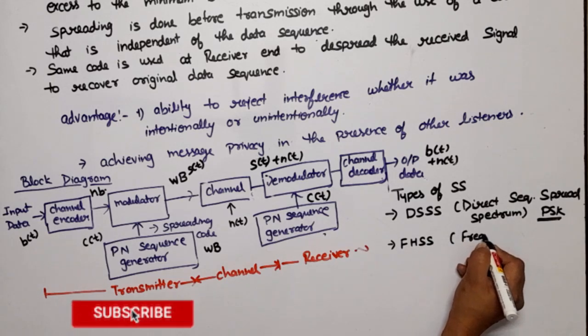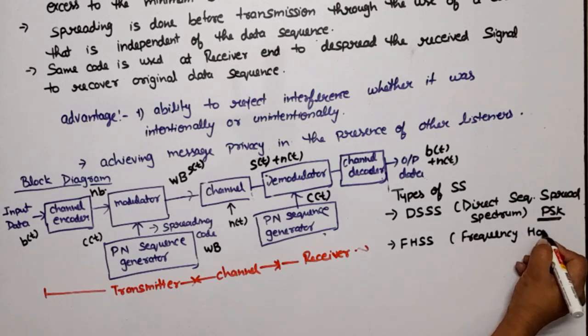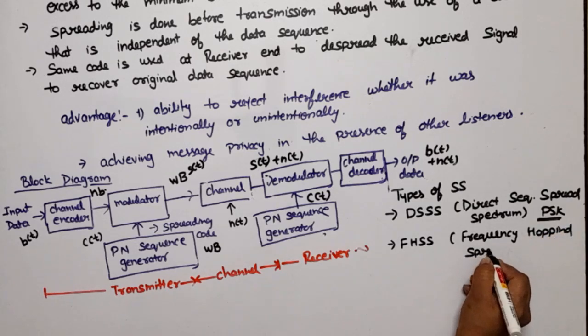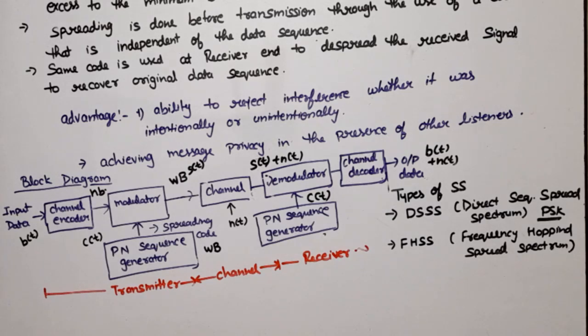Now one more technique: if modulation technique is frequency shifting or M-ary FSK, that is called FHSS means frequency hopping spread spectrum. These are the types of spread spectrum which we have to study in detail. So in next video I will discuss how we can generate pseudorandom noise sequence and after that I will discuss DSSS then FHSS. Thank you so much. If you have any doubt please write down in comment section. Thank you.